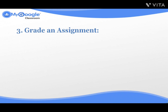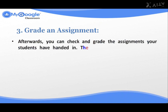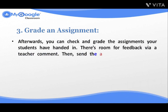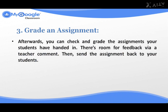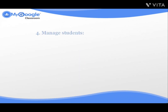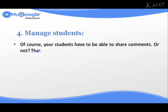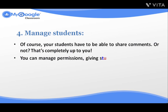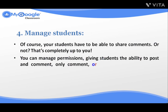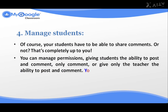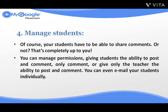Number three: Grade an Assignment. Afterward, you can check and grade the assignments your students have handed in — there's room for feedback via teacher comment. Then send the assignment back to your students. Number four: Manage Students. Of course, your students have to be able to share comments, or not — that's completely up to you. You can manage permissions, giving students the ability to post and comment, only comment, or give only the teacher the ability to post and comment. You can even email your students individually.